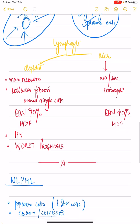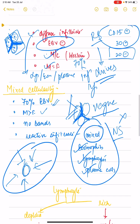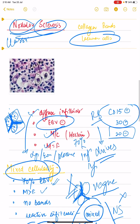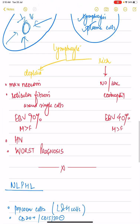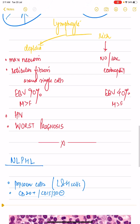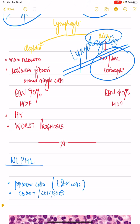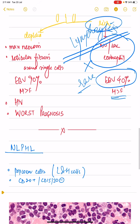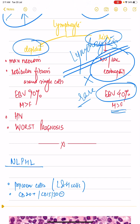In mixed cellularity, EBV is positive in around 70% of cases. In both mixed cellularity and nodular sclerosis the infiltrate is mixed — plasma cells, eosinophils, and lymphocytes are all present. In the lymphocyte rich variant, the infiltrate is predominantly lymphocytes only; eosinophils and plasma cells are either not seen or very rare. It is also EBV positive in around 40% of cases, and males are more affected than females.